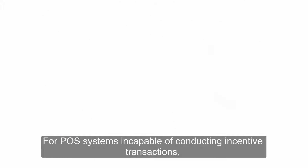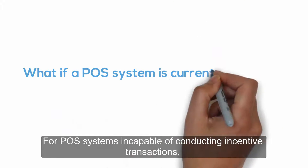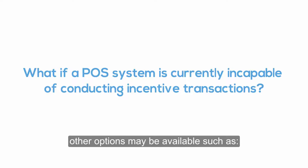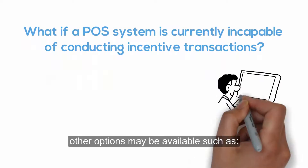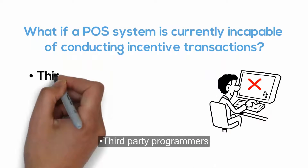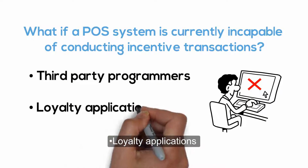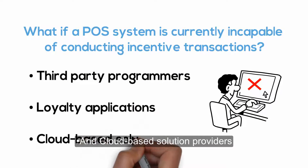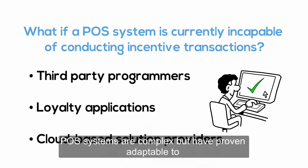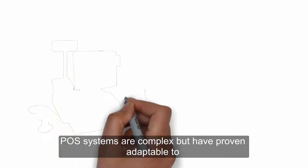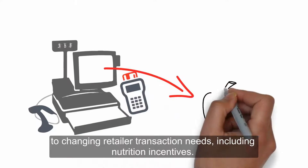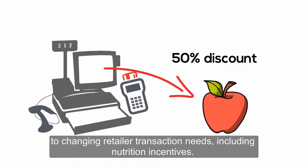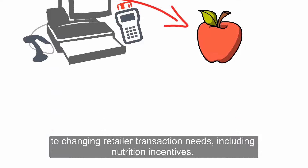For POS systems incapable of conducting incentive transactions, other options may be available, such as third-party programs, loyalty applications, and cloud-based solution providers. POS systems are complex, but have proven adaptable to changing retailer transaction needs, including nutrition incentives.